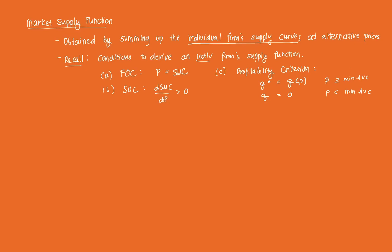In the last video, we discussed the derivation of the individual firm's supply curve using the three conditions, and in particular, we zeroed in on the profitability criteria. Now, what we want to do is aggregate those individual firm's supply to get the market supply, and that's what the market supply function is all about.